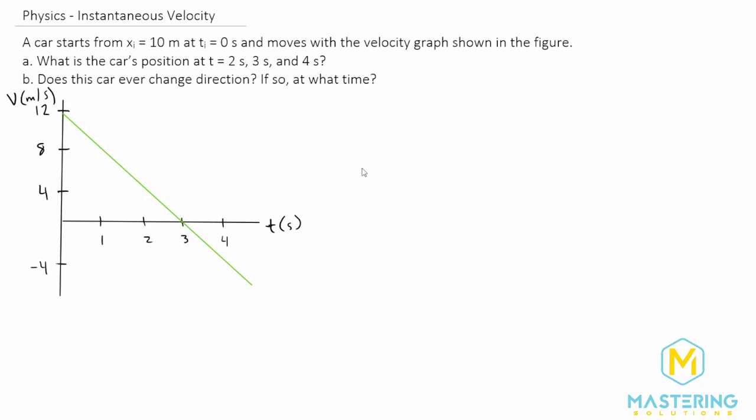Welcome to Mastering Solutions. In this problem, a car starts at a position of 10 meters at time zero seconds, and moves according to this velocity versus time graph. They want us to find the position at each of the times 2, 3, and 4 seconds.